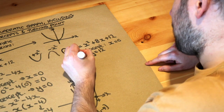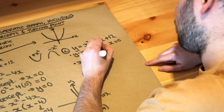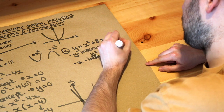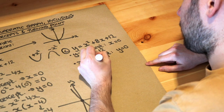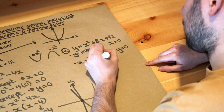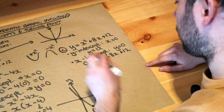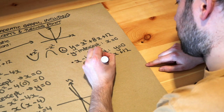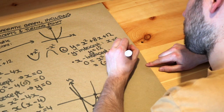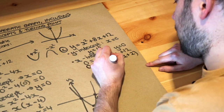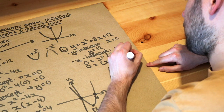Next we find the x-intercepts by making y equal to zero: zero equals x squared plus 8x plus 12. We factorise this quadratic to get (x plus 6)(x plus 2) equals zero, which means either x equals minus 6 or x equals minus 2.